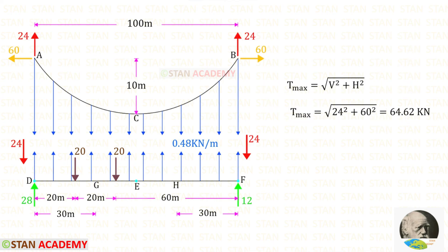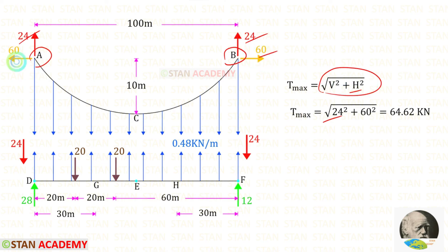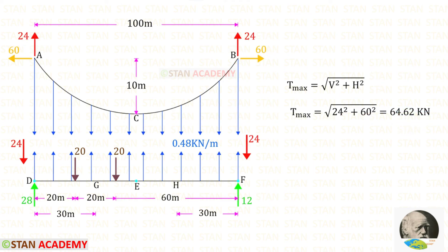Now let us find the maximum tension in the cable. We know that the maximum tension occurs at the supports. The formula to find the maximum tension is the square root of V squared plus H squared. V is 24 and H is 60. Finally for the maximum tension we will get 64.62 kN. Now we are going to end this session. Thank you for watching this video.